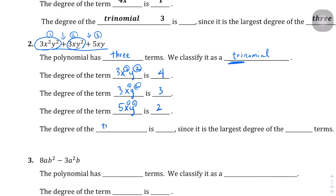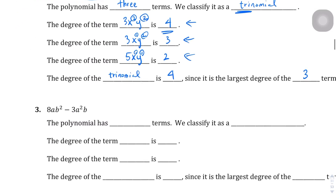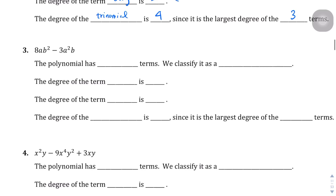The degree of the whole trinomial is four, because the degree of a polynomial is the largest degree among all its terms. Four is the highest of the three terms, so we say it has a degree of four. We don't add the degrees together — we keep with the highest.